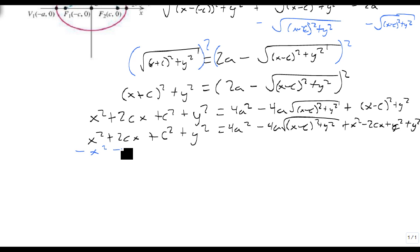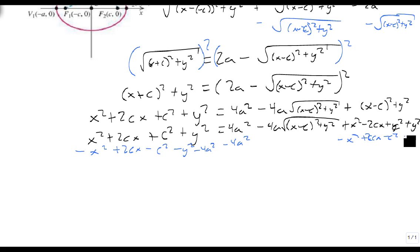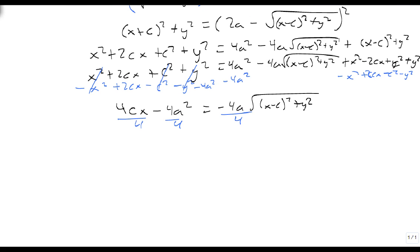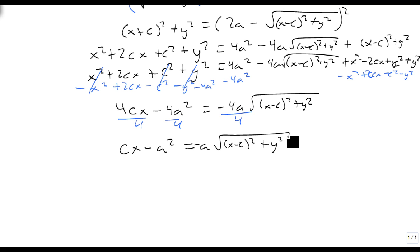When we subtract everything over, notice that the only things that don't cancel are the 2cx terms and the 4a² term. These combine to give 4cx − 4a² equals −4a times that square root. Dividing everything by 4, we get cx − a² equals −a times the square root of (x − c)² + y².